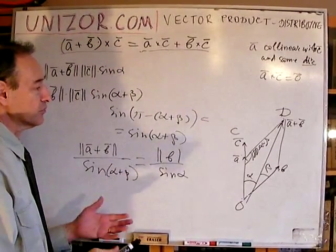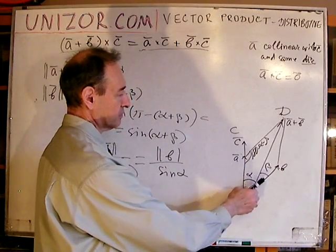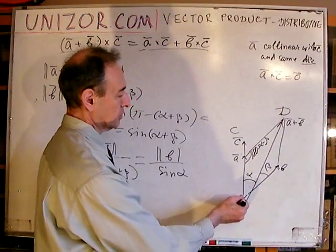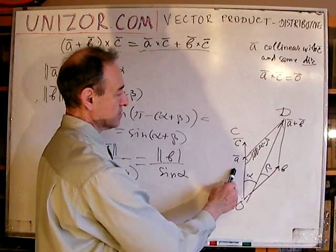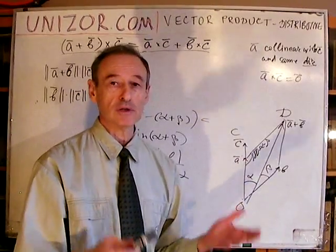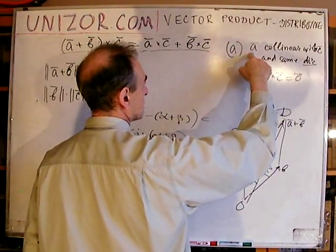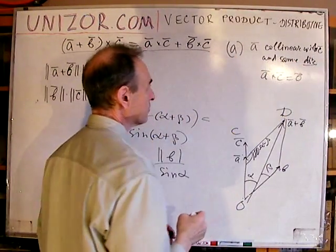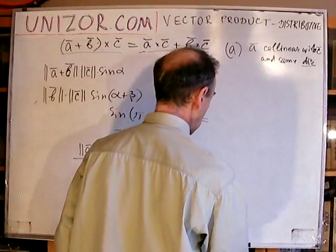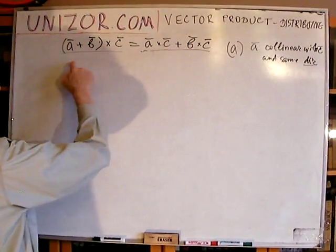That actually completes the proof, because we have already proven that the vector product of B and C is perpendicular to the whiteboard, and the vector product of (A+B)×C also points the same way, and their magnitudes are the same — so basically the vectors are the same. They have the same direction and the same length. This proves that in this particular case — let's call it Case A — when vector A is collinear and has the same direction as C, we have proven our theorem.